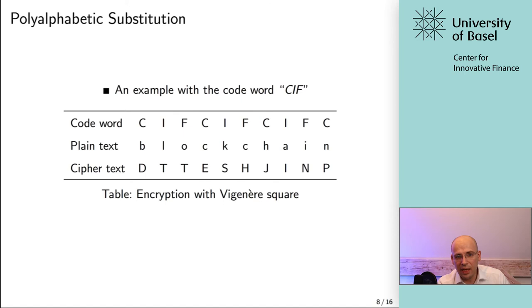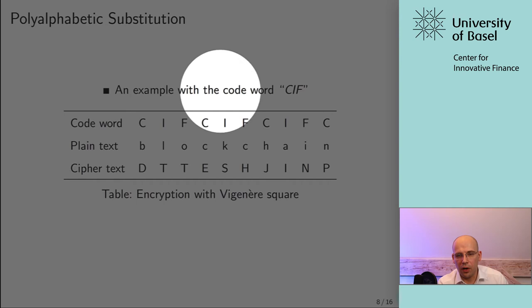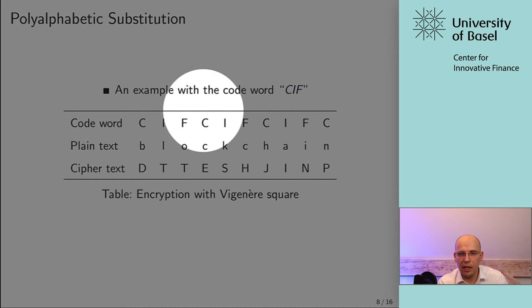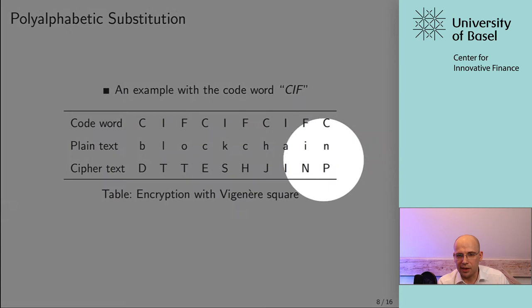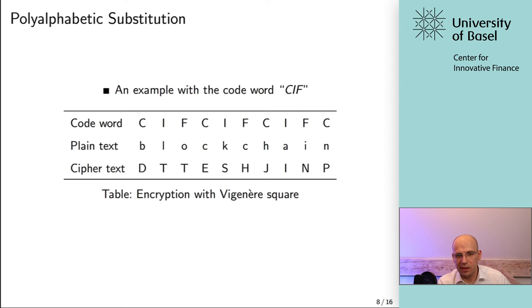What you need for this to work is a code word. This has nothing to do with the plaintext or the cipher — it's really something additional. In our case, the code word would be CIF — Center for Innovative Finance — and you just repeat that: CIF, CIF, CIF, and so on. Depending on the length of your plaintext, you concatenate it and use it as many times as needed. The plaintext in our case would be 'blockchain,' and that gives us the resulting ciphertext. Both the sender and receiver must know the code word.